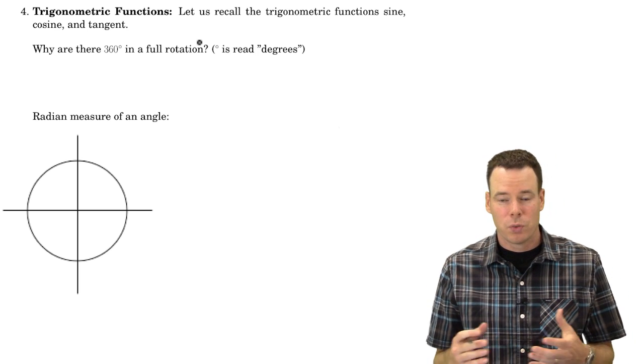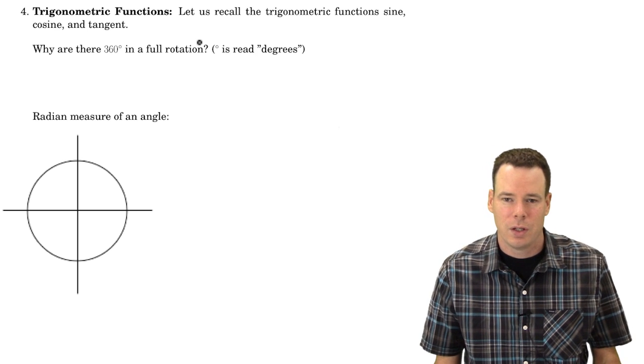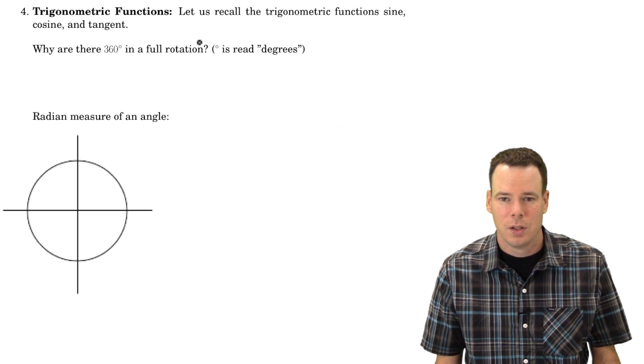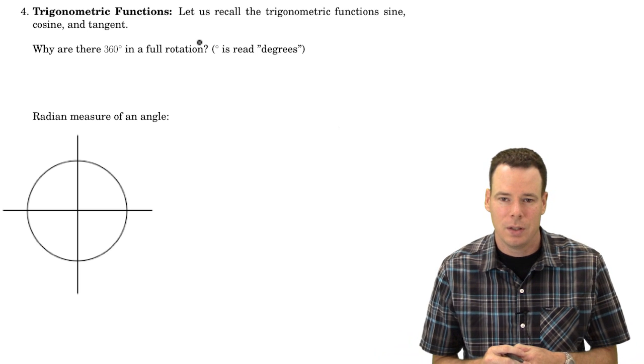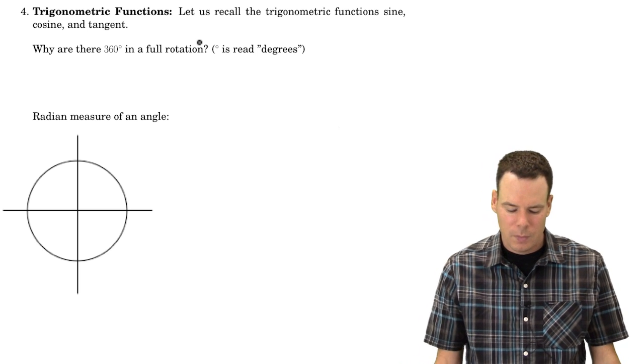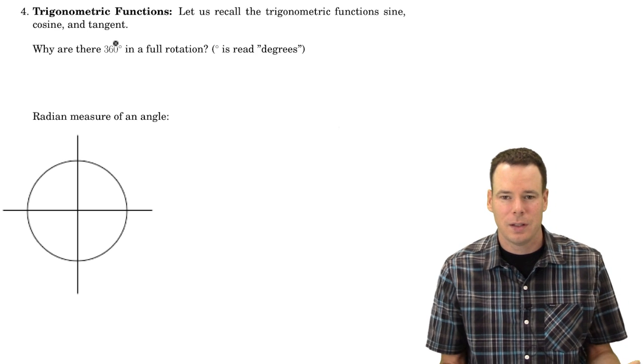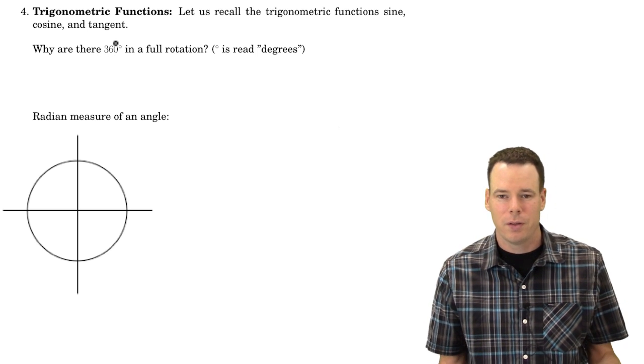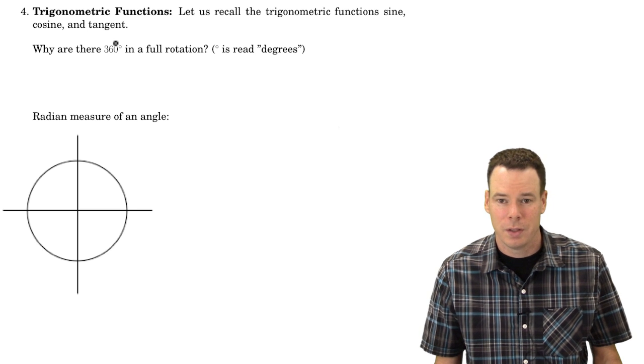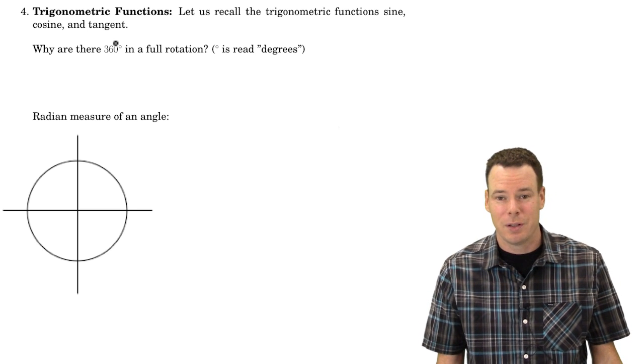If one uses degree measure for an angle, then the first thing you learn is that there are 360 degrees in a full rotation, so a half rotation is 180 degrees, a quarter rotation is 90 degrees, and so on. Why 360? What's the significance of this number? Why aren't there 400 degrees in a full rotation? Why isn't there 1 degree in a full rotation? Why 360? Sort of a bizarre number if you think about it.